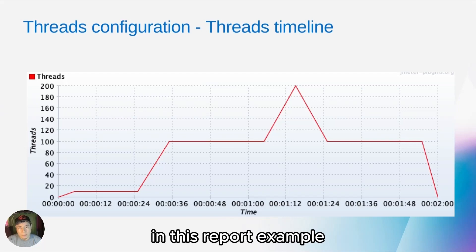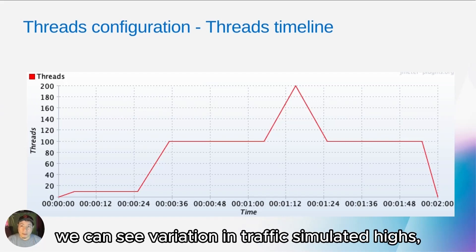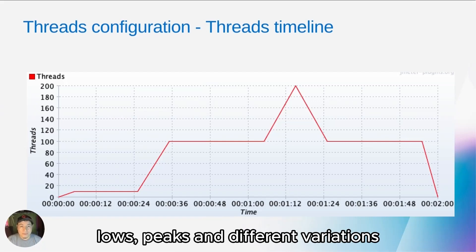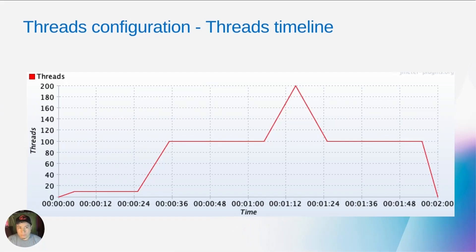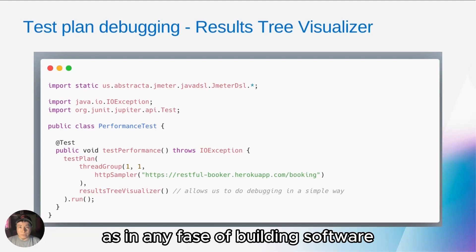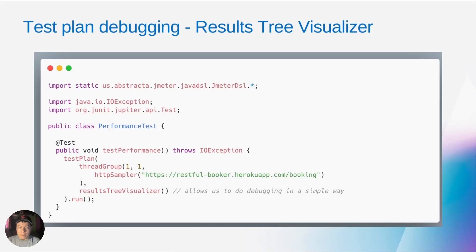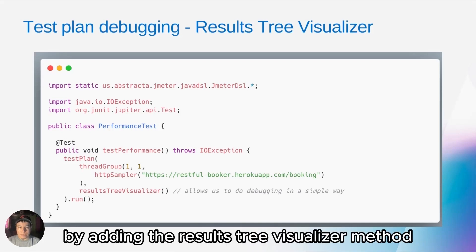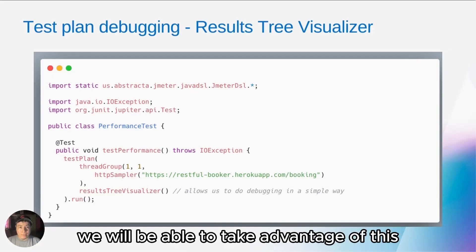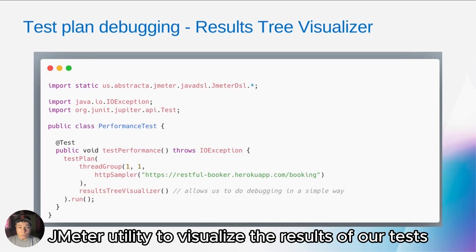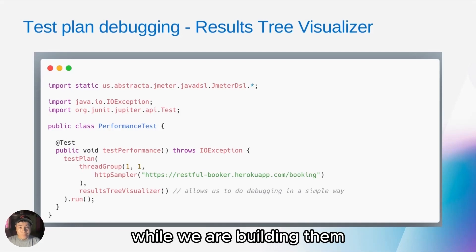In this report example, we can see variations in traffic — simulated highs, lows, peaks, and different variations. As in any phase of building software, we will need to analyze and debug our code. By adding the results tree visualizer method, we will be able to take advantage of this JMeter utility to visualize the results of our test while we are building them.